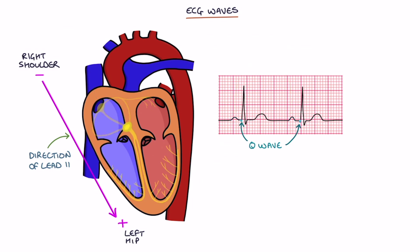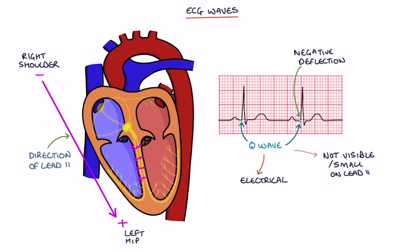The Q wave is either not visible or small on lead 2. It is a negative deflection at the start of the QRS complex, representing the electrical impulse traveling from left to right in the interventricular septum — the muscular wall between the ventricles. As this is roughly at 90 degrees, or perpendicular to the direction of lead 2, it doesn't usually show up on lead 2. The electrical activity that shows up is when the impulse is moving further away from or closer to one of the electrodes. With the Q wave, the impulse is moving across but not closer or further from either electrode in lead 2, so it doesn't appear as a significant difference from the baseline.